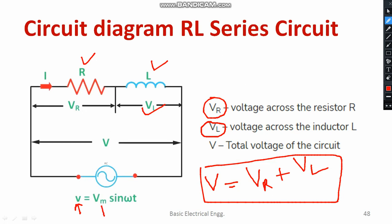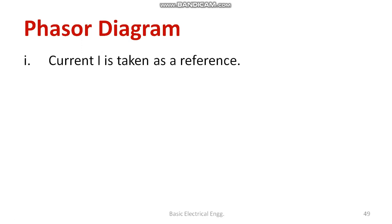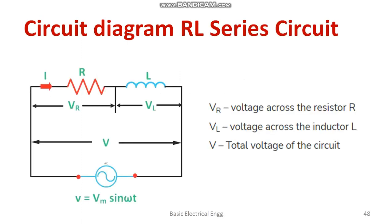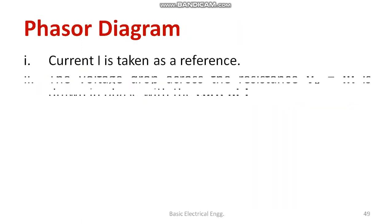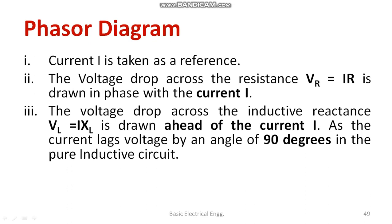The applied voltage is given by V = Vm sin(ωt), where V is the instantaneous voltage, Vm is the maximum voltage, and ω is the angular frequency. For the phasor diagram, it is better to take current as a reference quantity because the same current flows through both resistor and inductor. The voltage across the resistor is VR = I × R, and in a resistor, voltage and current are in the same phase — the phase difference is zero.